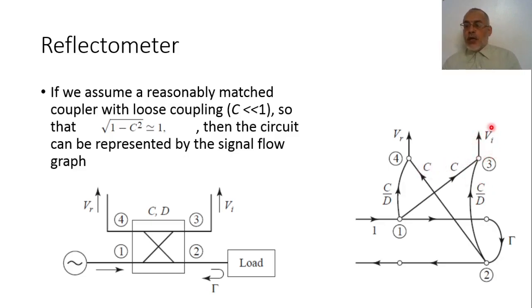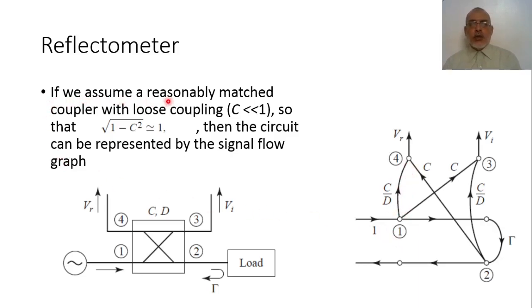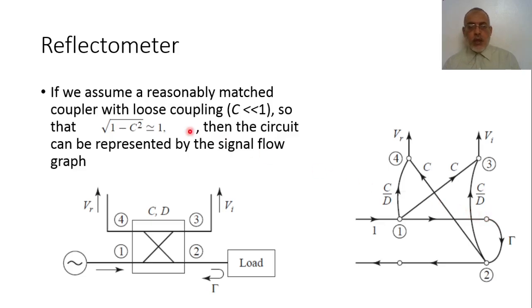The total signal at port 3 (V incident) is composed of the coupled signal from port 1 plus the directivity signal from port 2. The total signal at VR is mainly the coupled signal from port 2 plus the directivity signal from port 1. Assuming a reasonably matched coupler with loose coupling, where the coupling coefficient C is much less than unity, nearly all the power from port 1 goes to the load, and the circuit can be represented in a signal flow graph.